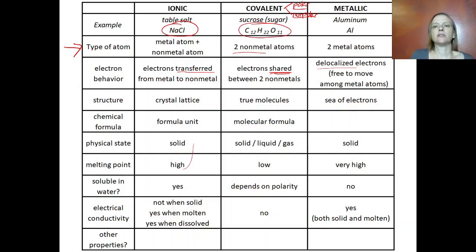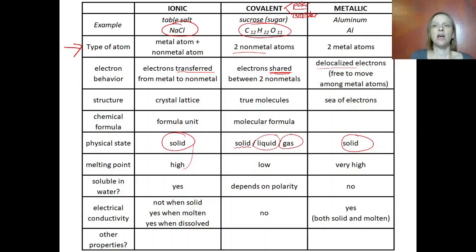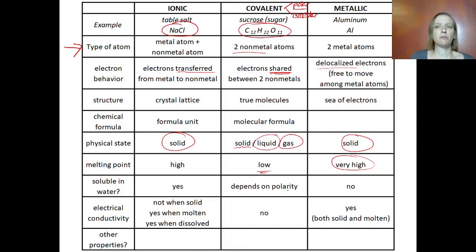Physical states differ as well. If you have a solid, it could be ionic or metallic, though covalent solids exist too. But if you have a liquid or a gas, you almost certainly have a covalent molecule — because the melting points of ionic compounds are very high, metallic compounds even higher, but covalent compounds have a low melting point. For water solubility: ionic compounds are often soluble in water. For covalent compounds, it depends on polarity — polar molecules are soluble in water, but nonpolar are not.